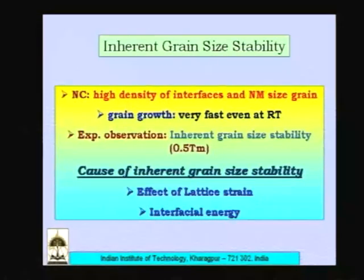In nano composites, growth rates are much lower than monolithic (single phase) nano materials. We also see that under certain conditions nano crystals do not want to grow without these two mechanisms. The condition under which they do not want to grow is when they are strained. When there is strain inside a material, there is an inherent stability for the nano crystalline material towards grain growth.